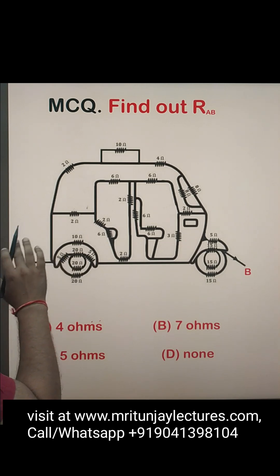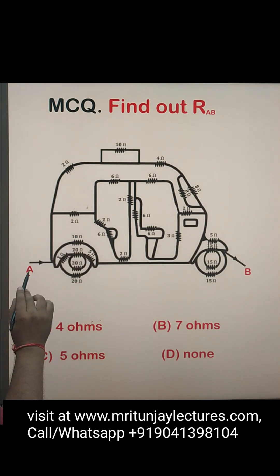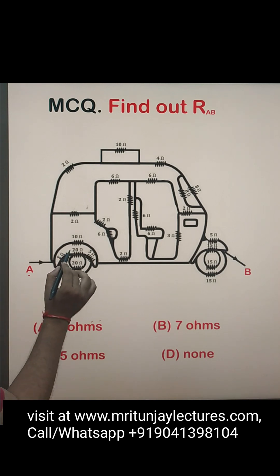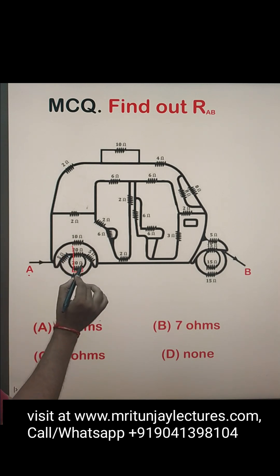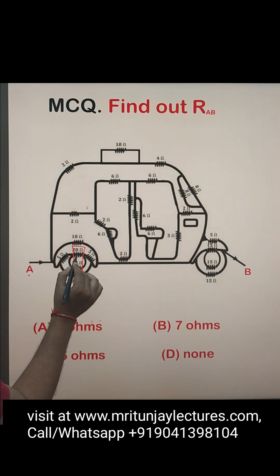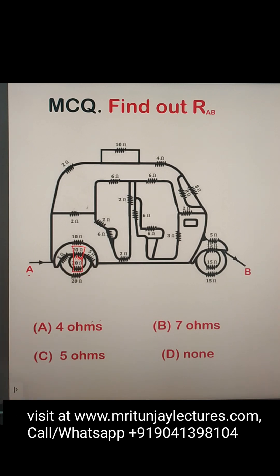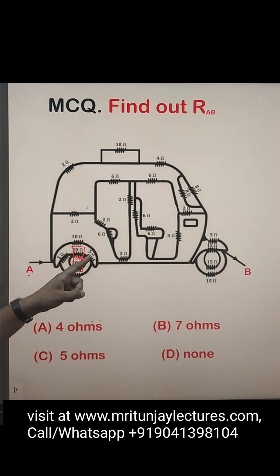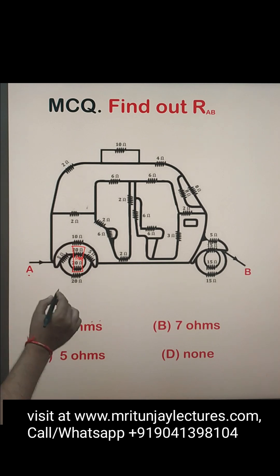The question of the day: determine the equivalent resistance between a and b. Looking carefully, there are two 20Ω resistors whose parallel combination gives 10Ω. Then we have 10Ω, 5Ω, and 5Ω in series.